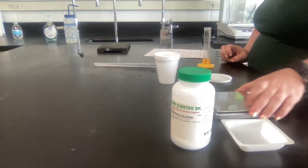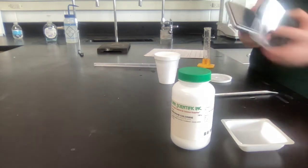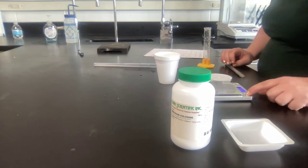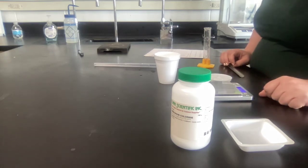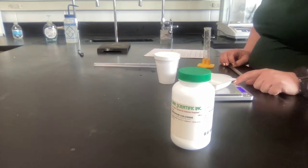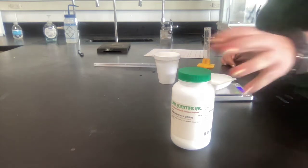You're then going to mass out between 1.5 and 2.5 grams. Turn on your balance, put your weigh boat on there, hit the T button to tare it, which just means to zero it.